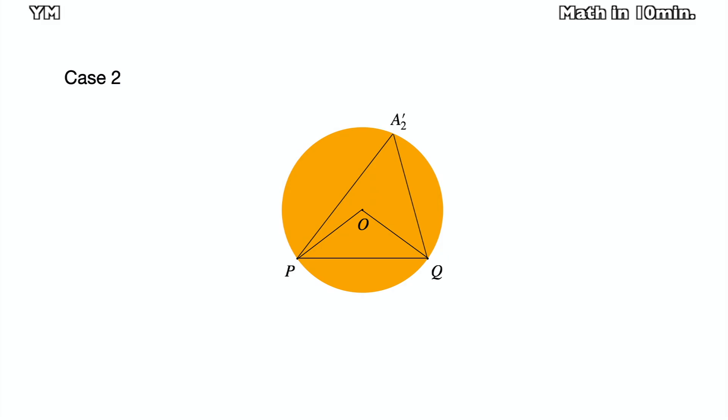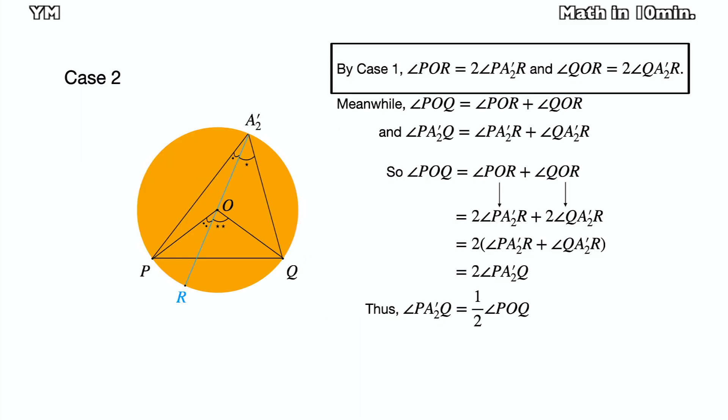The next case is that the center of the circle is inside the inscribed angle. I will draw a blue line which passes O and A2. Let me define a point R at which the blue line meets the arc PQ. Then by case 1,